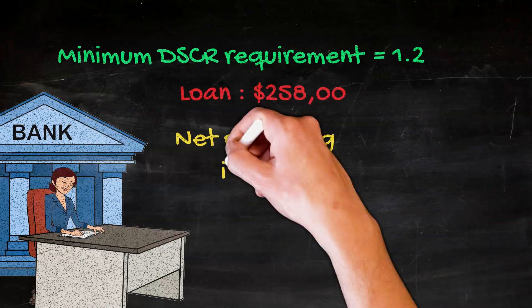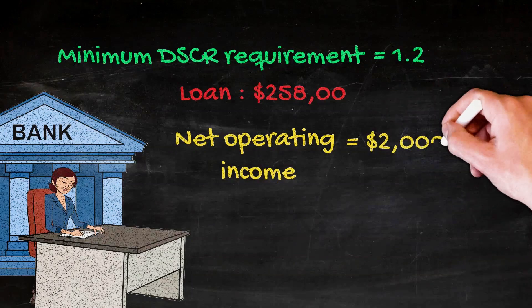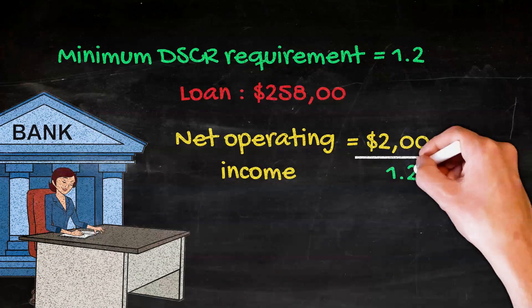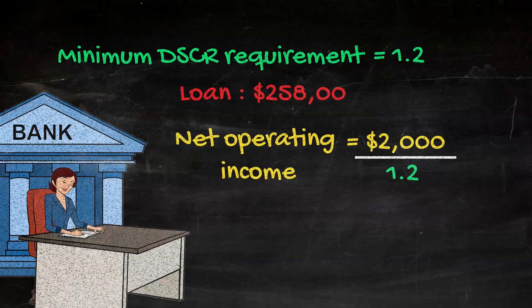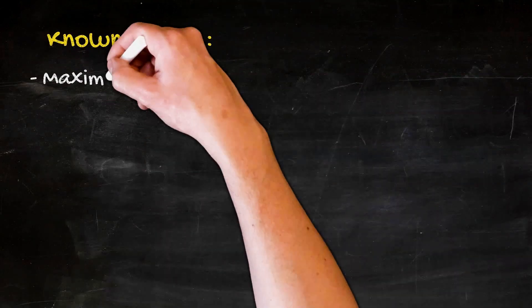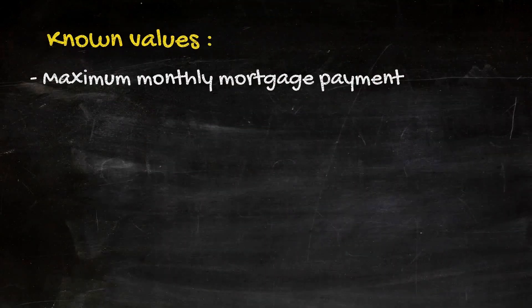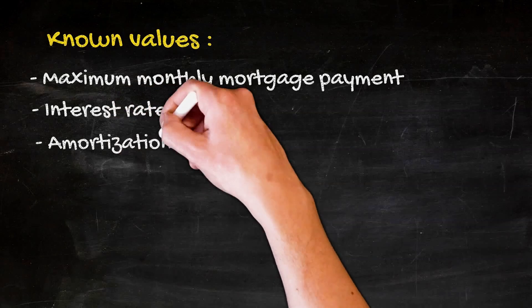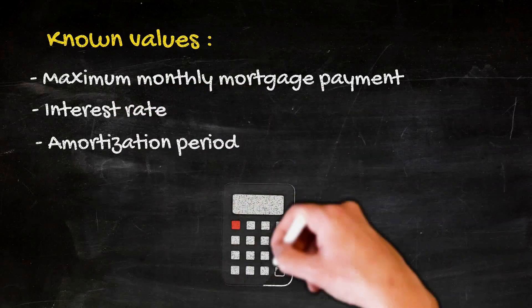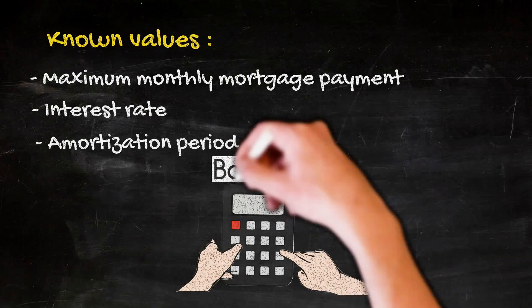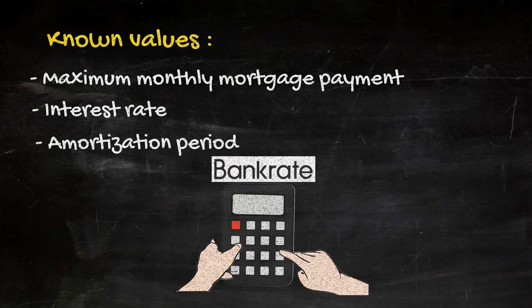The way I figured that out is by taking the $2,000 net operating income and dividing it by the bank's minimum DSCR of 1.2. This equals $1,666, which is the maximum principal and interest payment — the TDS — that the bank would allow. Once I have the maximum monthly mortgage payment, and I know the loan terms are 6% and a 25-year amortization, it's just a matter of plugging the numbers into a loan calculator like the one on bankrate.com and playing around with different loan amounts until the monthly payment matches $1,666.